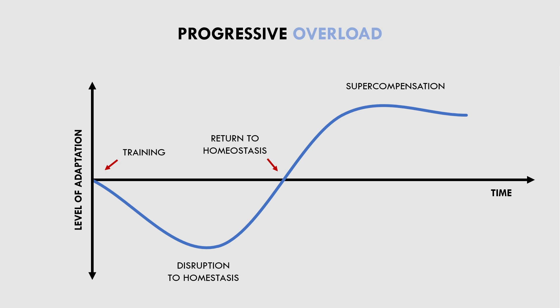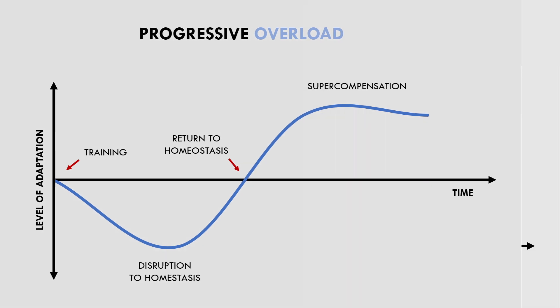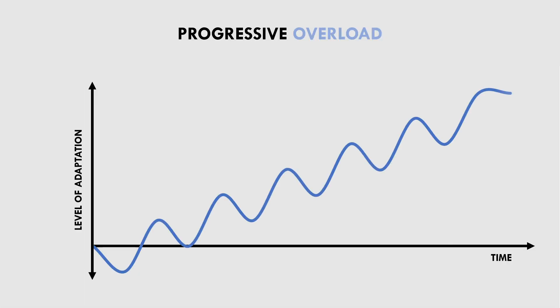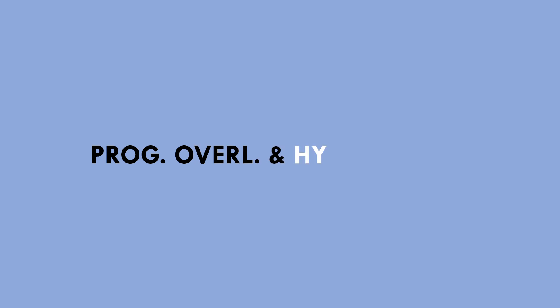So once we recover, we are actually in a more robust physiological state to handle that stress once again. This basic relationship is known as the general adaptation syndrome. If this adaptation cycle continues to occur, we will end up with significant long-term adaptations. Now that we understand progressive overload, we will explore how this applies specifically to hypertrophy training.